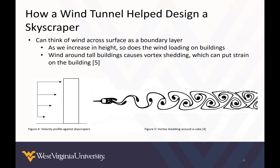Wind going across the surface of the earth can be thought of as basically a boundary layer — as we increase in height, so does the wind loading on buildings. Wind around tall buildings causes vortex shedding, which can put a strain on buildings and cause structural damage. Everything has its own oscillating frequency, and this can cause a lot of damage — you can see this as well in road signs when they oscillate hard in the wind.